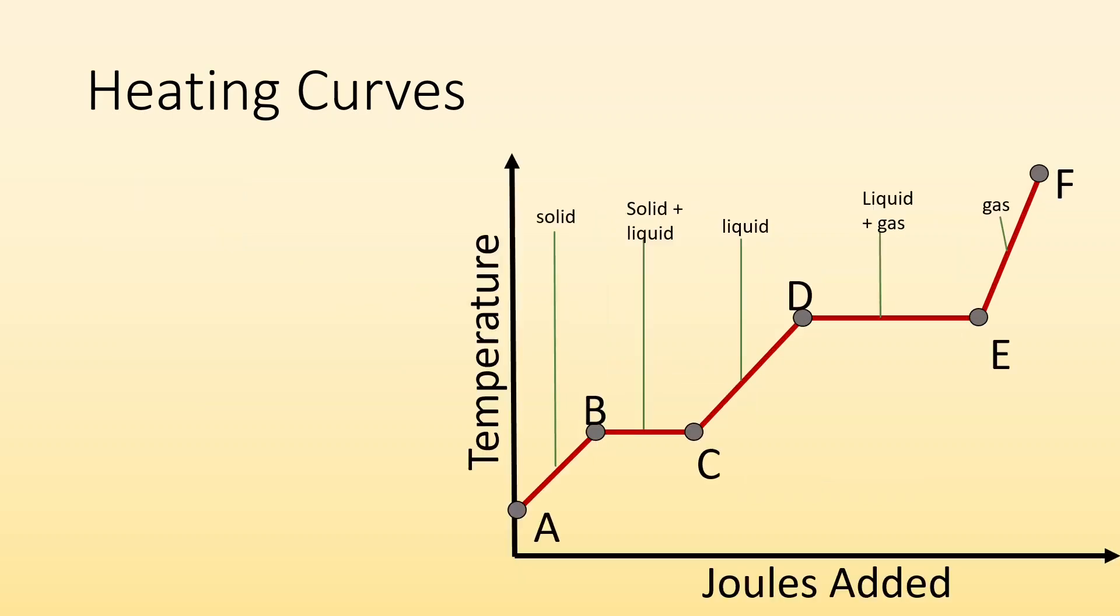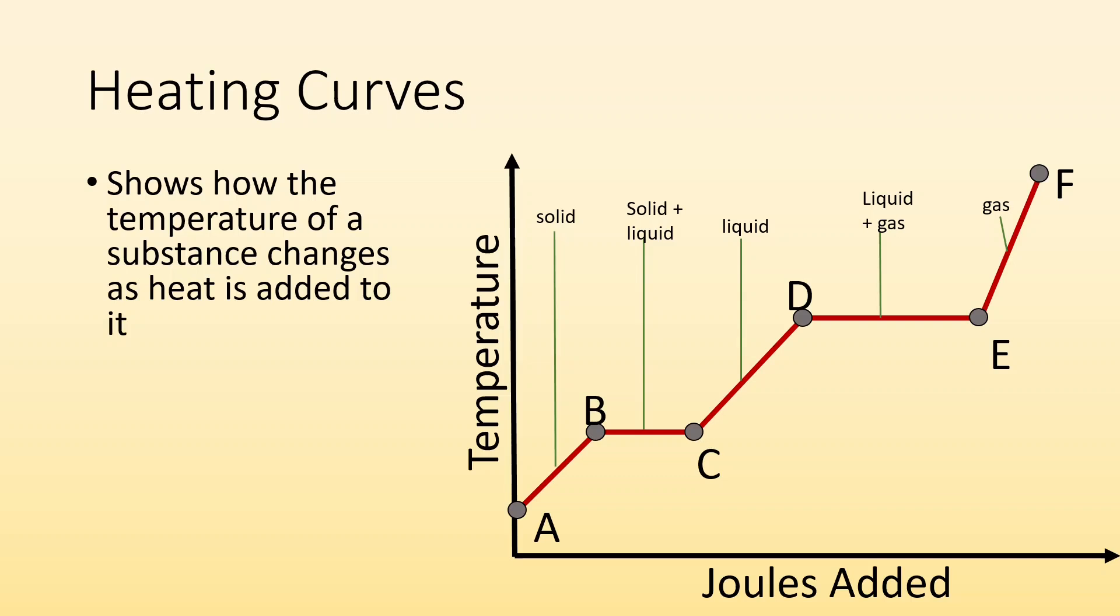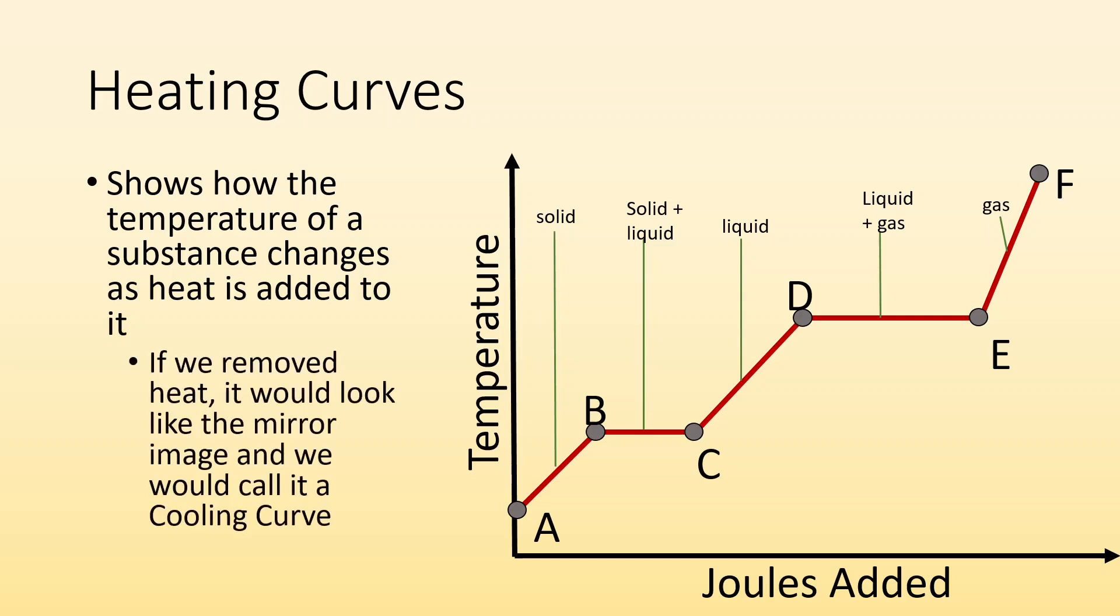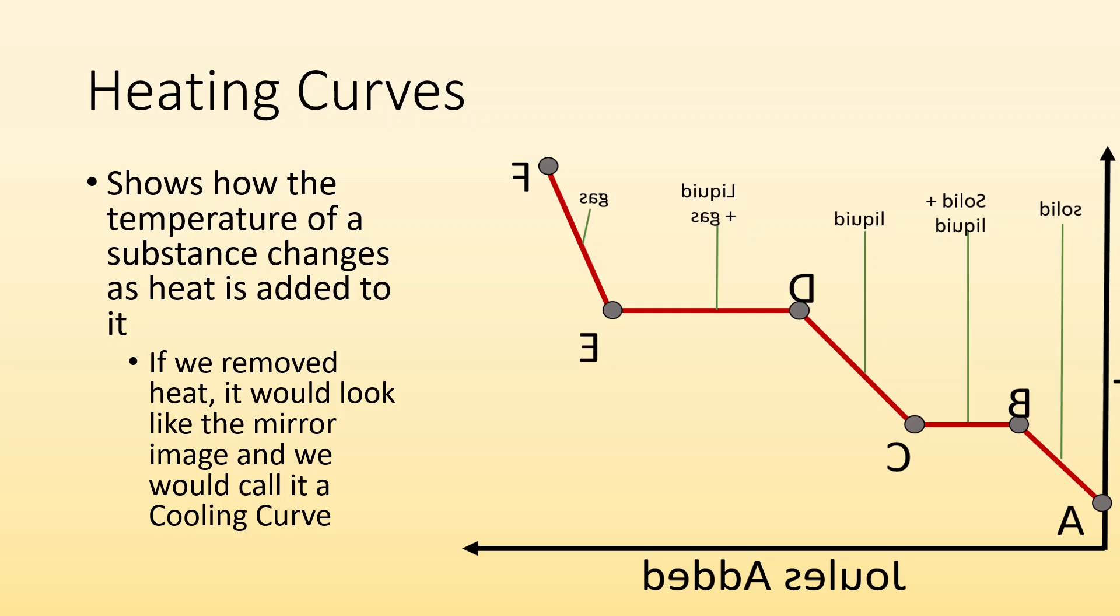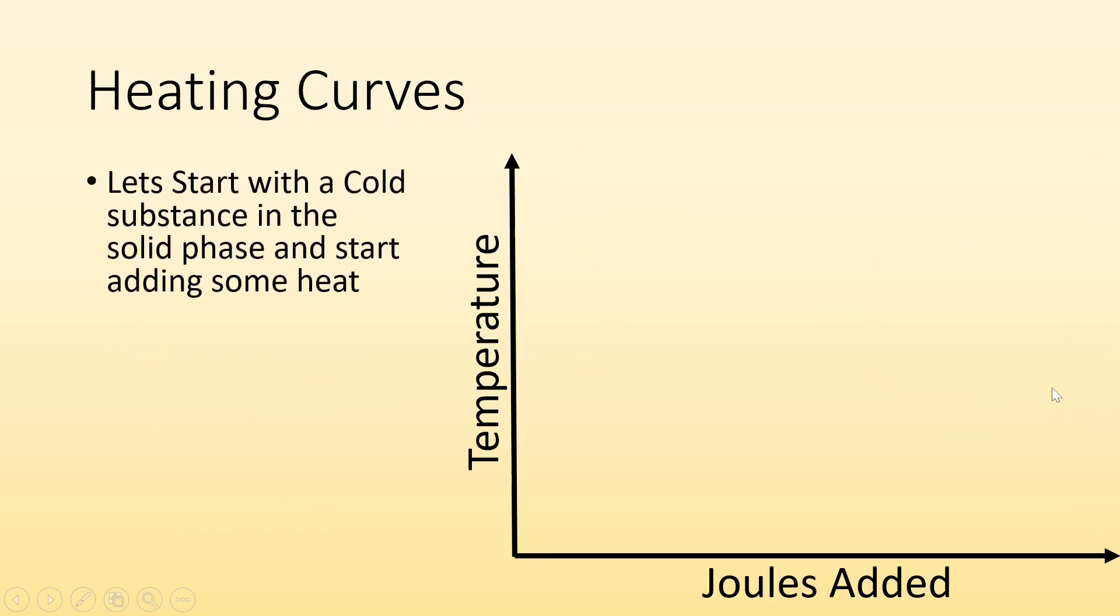So heating curves, what are they all about? Heating curves show how the temperature of a substance changes as heat is added to it. If we removed heat instead, we would have something that looked like the mirror image and we would call it a cooling curve. Because if you're cooling it, it would look like the mirror image. You'd start high and end low in that case because it's a cooling curve. But the same thing applies.